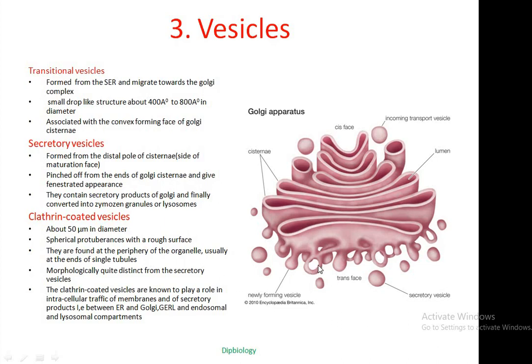The last type is clathrin-coated vesicles. They are about 50 nanometers in diameter, spherical with a rough surface, formed at the periphery of the organelle at the ends of tubules. Their morphology is readily distinct from secretory vesicles. Clathrin-coated vesicles are known to play a role in intracellular traffic of membranes and secretory products between the endoplasmic reticulum and Golgi body.